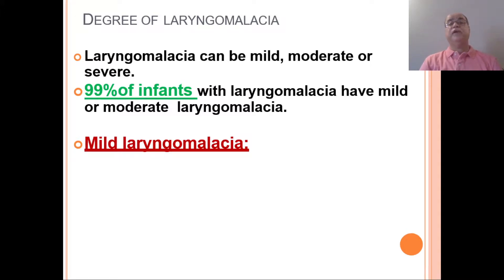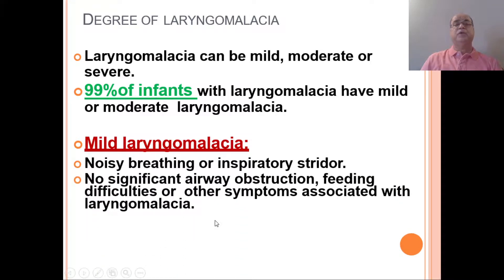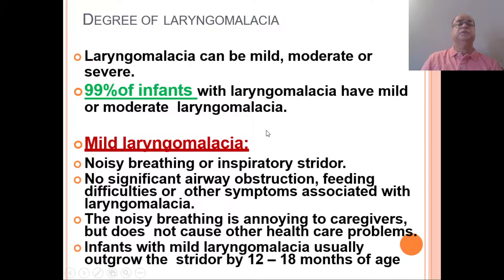In 99 percent of infants with laryngomalacia, the condition is mild or moderate. In mild laryngomalacia, there is inspiratory stridor but no significant airway obstruction, feeding difficulties, or other associated symptoms. The noisy breathing is annoying for parents but does not cause significant health problems. Children usually outgrow the stridor by one to one and a half years of age.